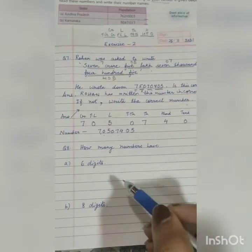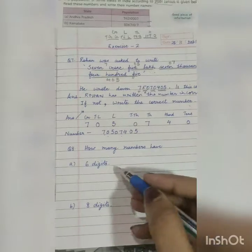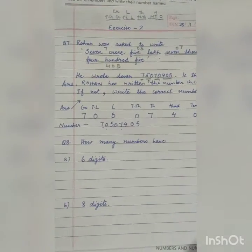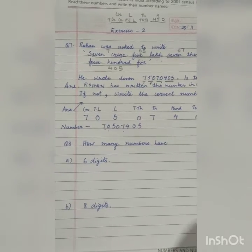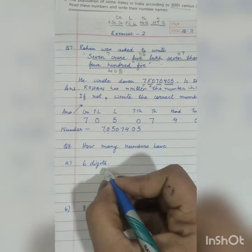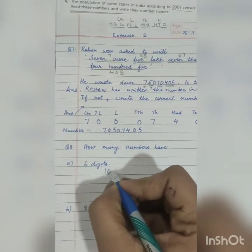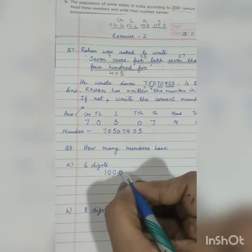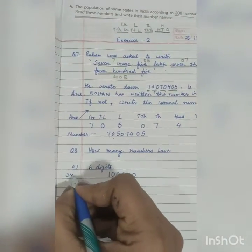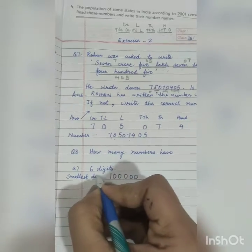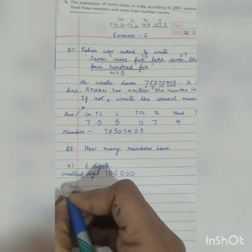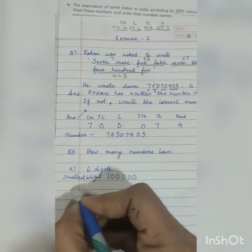Now moving to question number 8. How many numbers have 6 digits? So children, tell me how many numbers will have 6 digits? For that, first we will write the smallest 6 digit number. What is our smallest 6 digit number? 1 0 0 0 0 0. This is the smallest 6 digit number. If smaller than this, it becomes 5 digits, right?